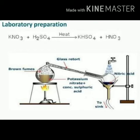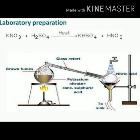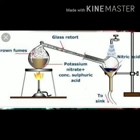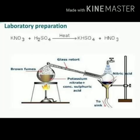Why should glass apparatus be used in the laboratory preparation of HNO3? Because the nitric acid vapors are collected and condensed; if the apparatus were made of any other substance like cork or rubber instead of glass, they may be damaged by the nitric acid vapors, which are very corrosive in nature.